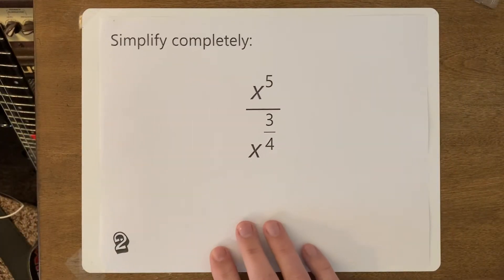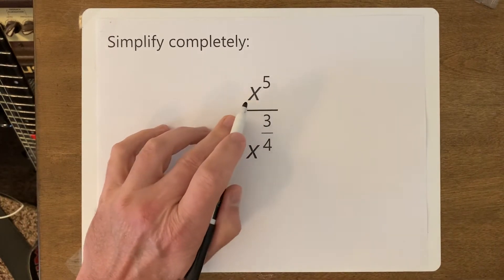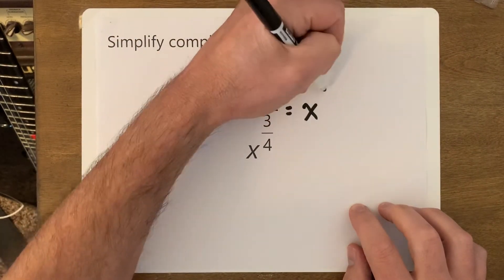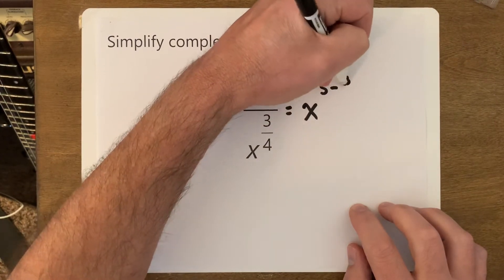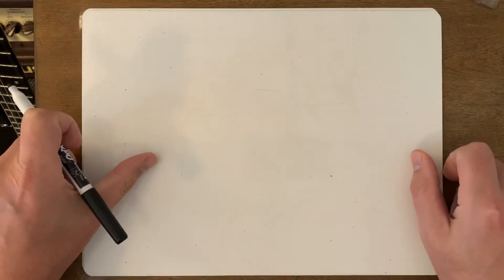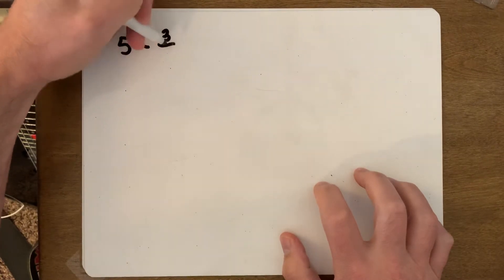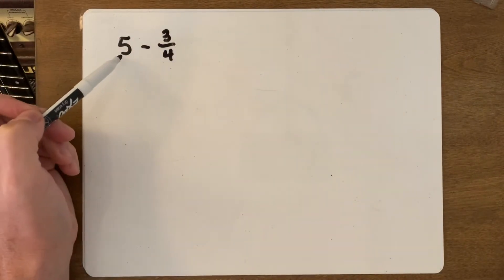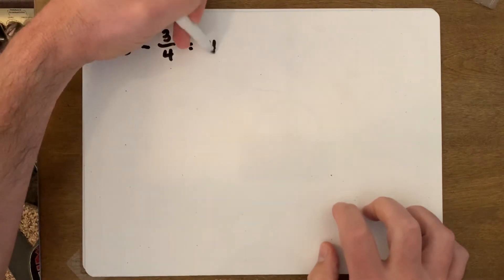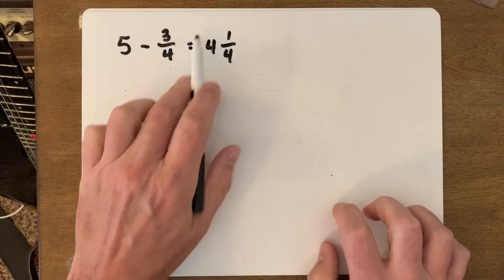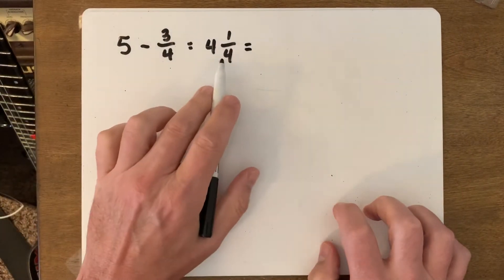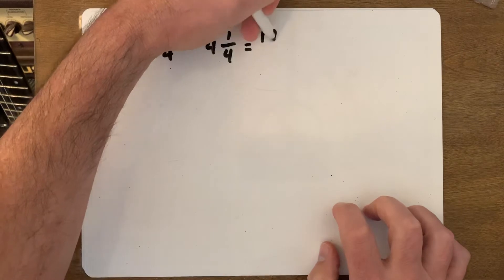In this next example we have division: x to the fifth is being divided by x to the three-fourths. From our rules, when we divide we subtract, so that's x to the five minus three-fourths. If you have five whole objects and take away three-fourths of one, that leaves you four and a quarter. But we don't ever want to put mixed numbers as exponents, so we turn it into an improper fraction: four times four is 16, plus one is 17 over four.